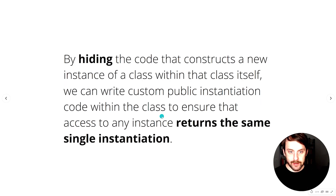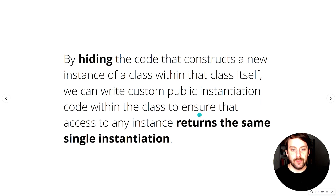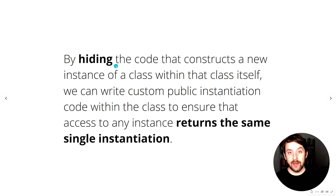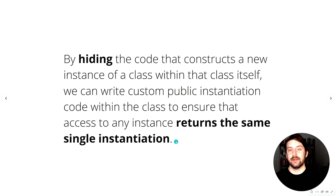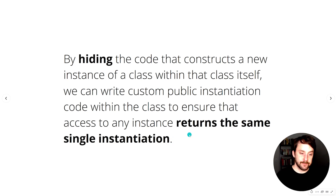Basically by hiding the code that constructs a new instance of some class within that class itself, we can write custom public instantiation code within the class to ensure that access to any instance returns the same single instantiation. This is a long-winded way of saying we're going to have a private constructor — we prevent clients from being able to say they want a new singleton object. Instead we're going to write what is effectively a public constructor by means of a static property that contains the private logic for returning that single instance, or creating it if it doesn't already exist.